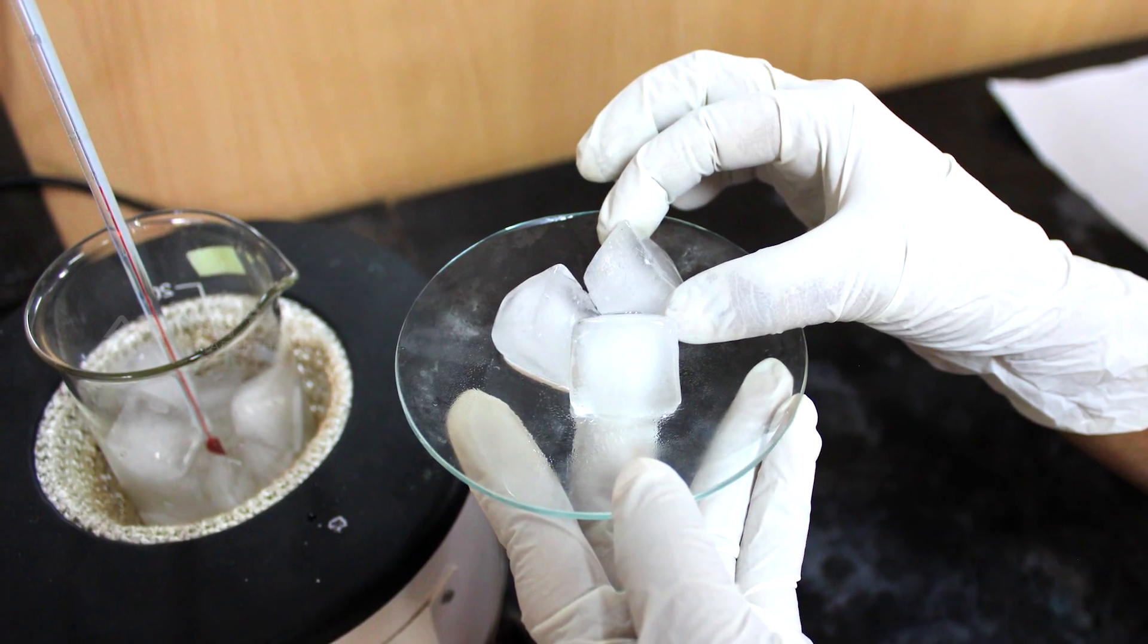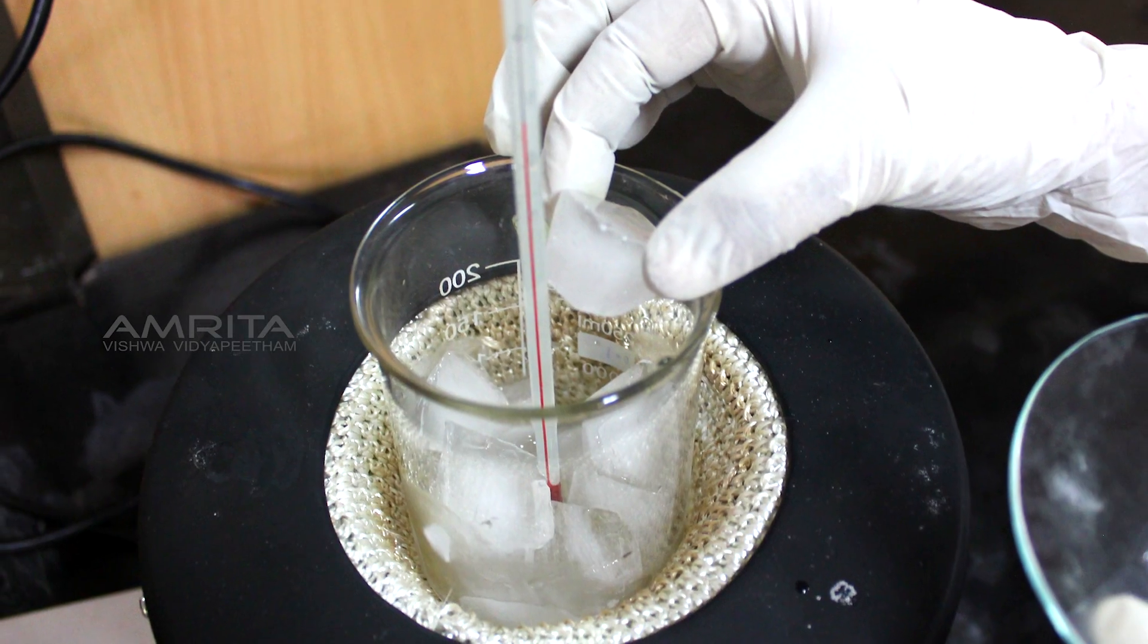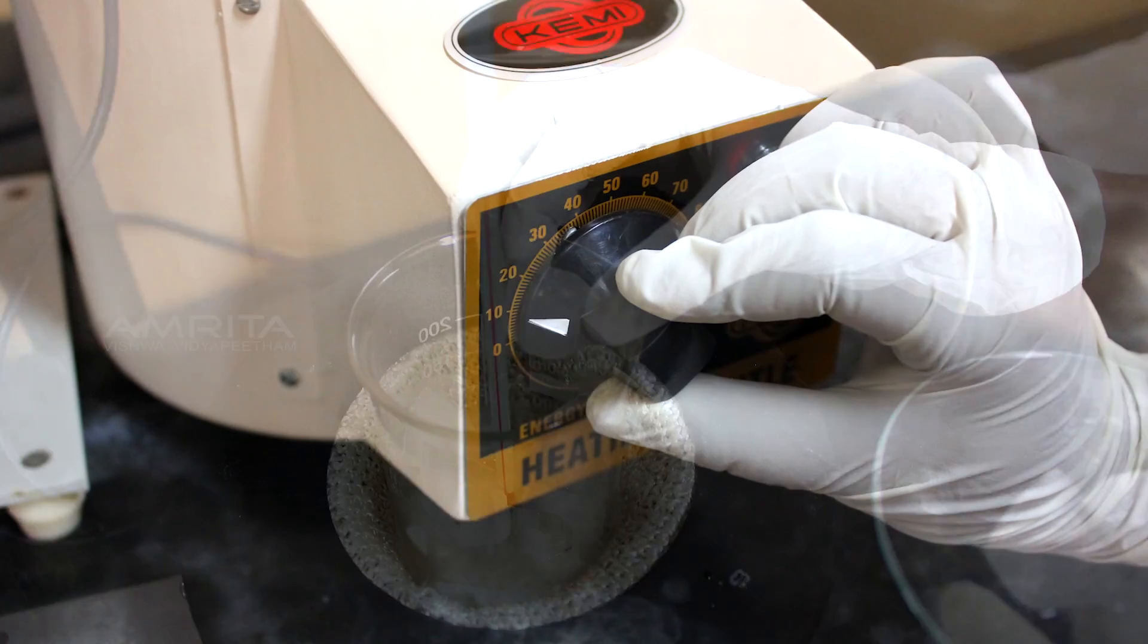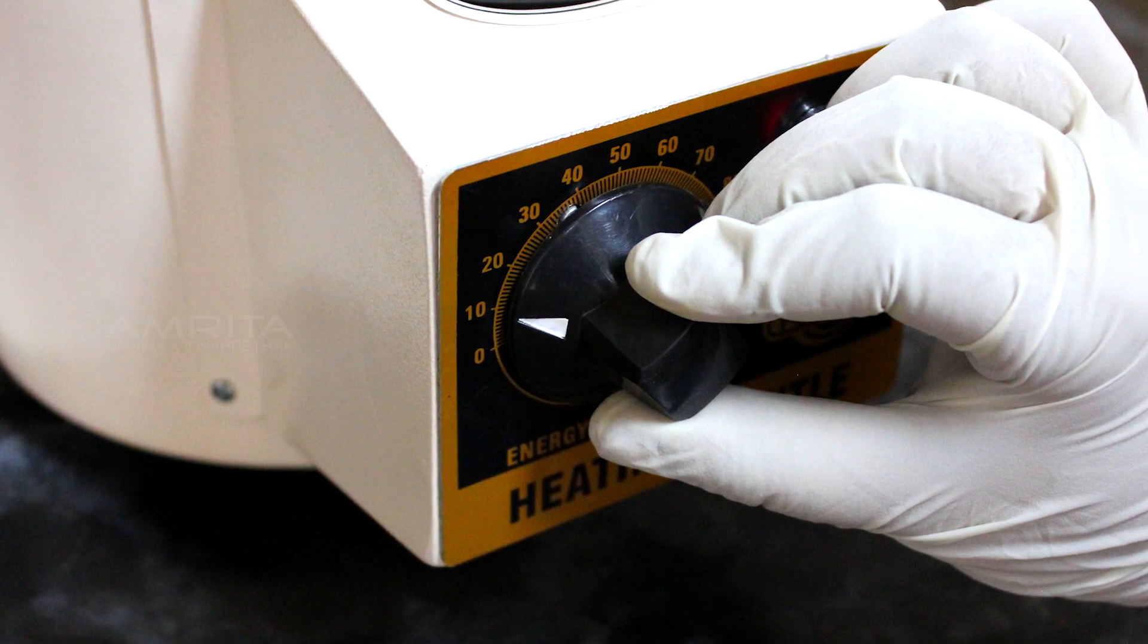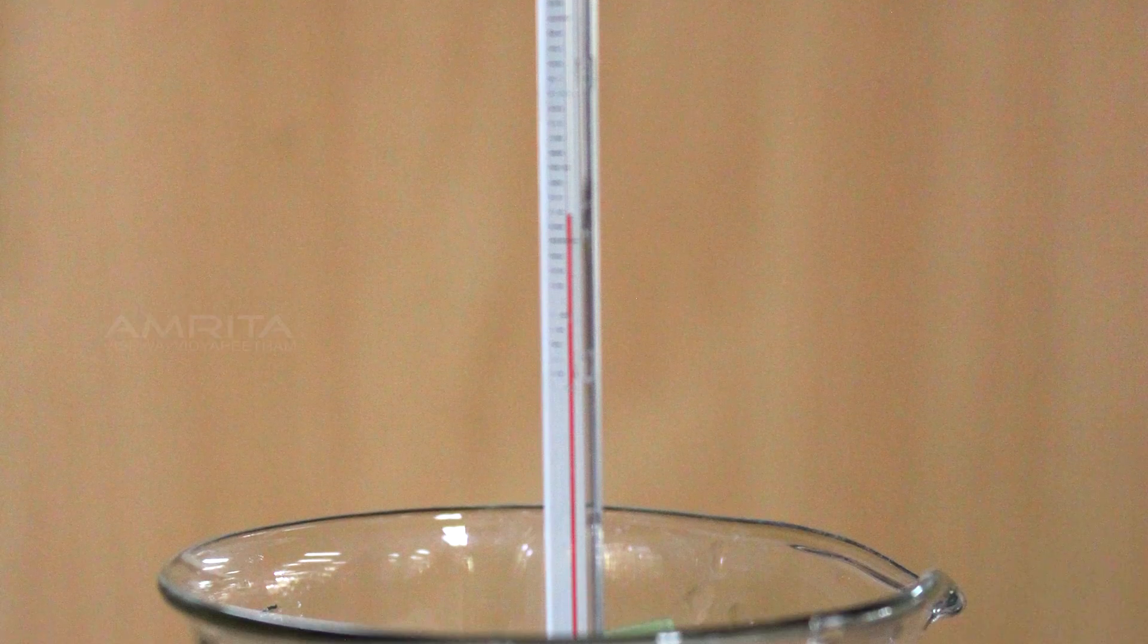Take some ice cubes and put them quickly in the beaker. Start heating the ice cubes by increasing the temperature of the heating mantle.